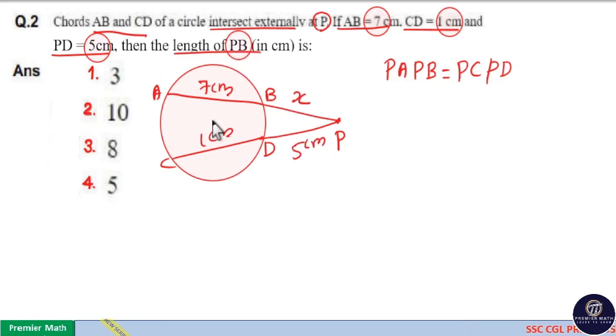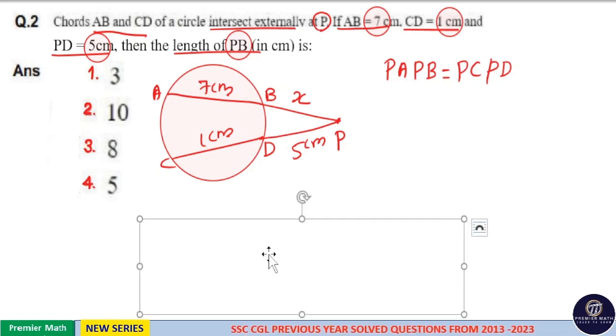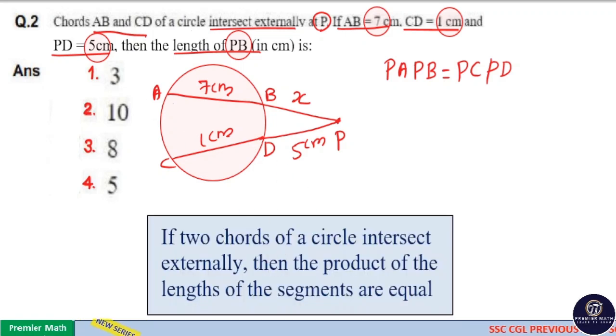Consider the length of PB as X. Here, this is the concept used. So, let's find the answer. Here, PA means 7 plus X.